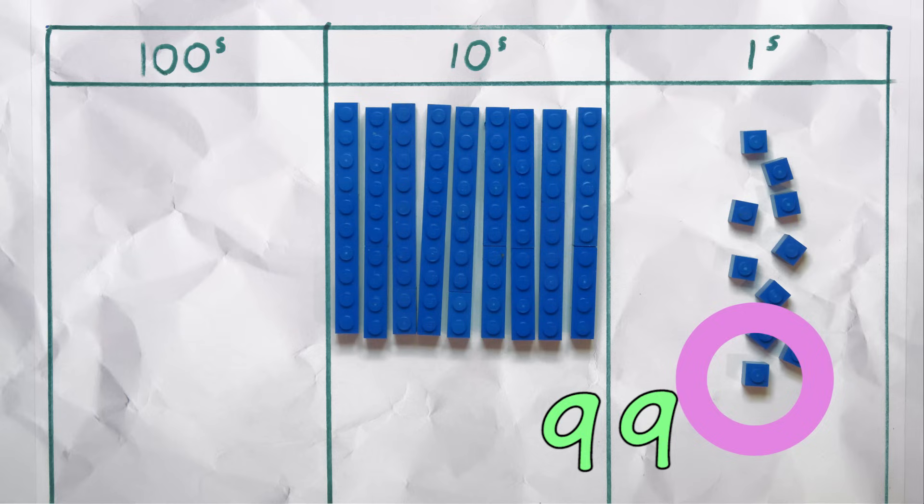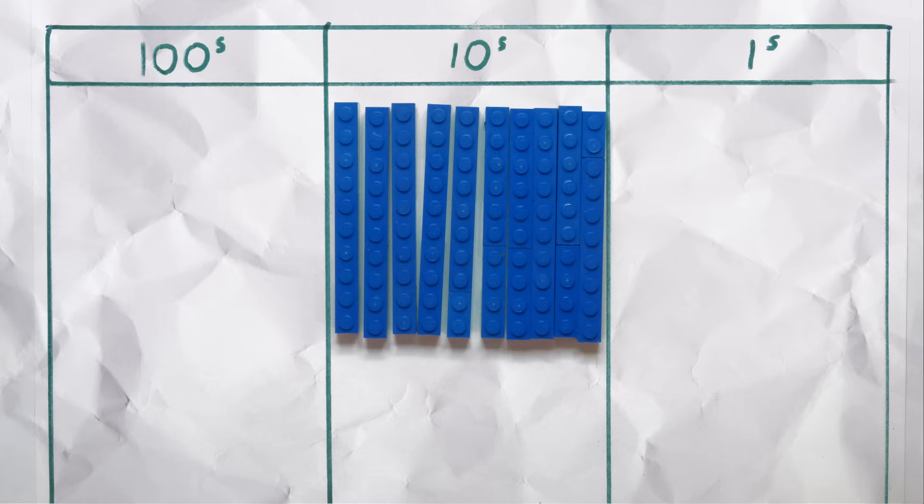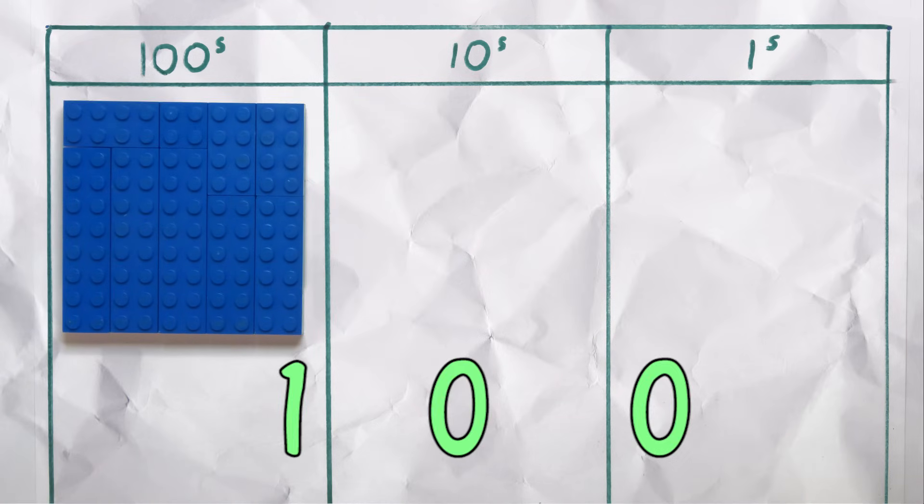Adding one more, we end up with 10 tens. So we parcel them all up and say we have 1 hundred, and 0 tens and 0 units, and we write it as 100.